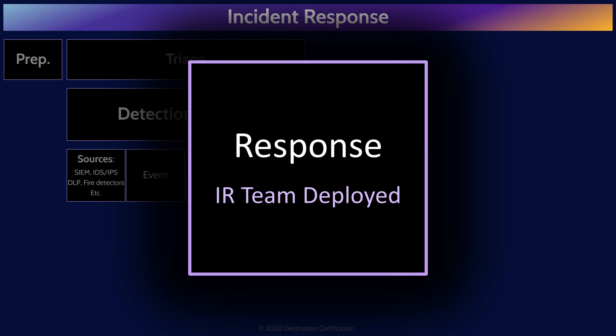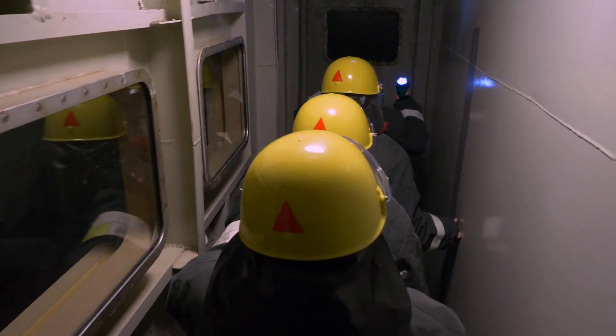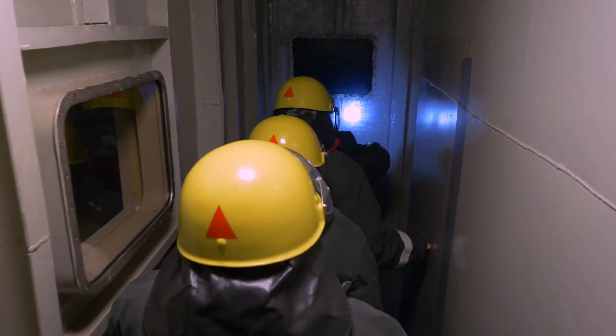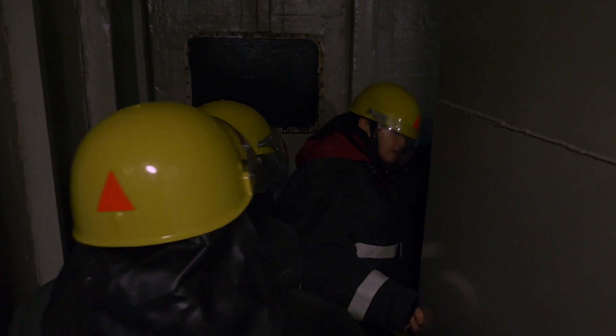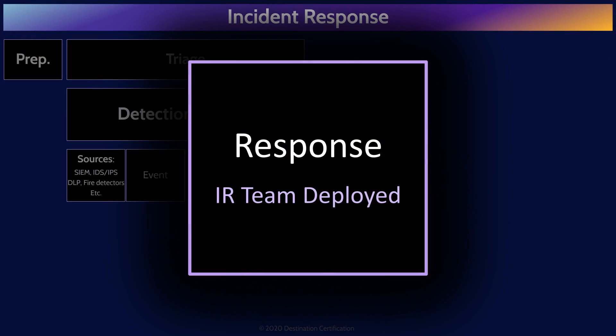Once we have detected an incident, the next step is to respond by activating our incident response team. One of the first things the incident response team is going to do is conduct an impact assessment. They're going to try to determine the severity of the incident and how long it will take to recover. The impact assessment drives the rest of the process. And if the maximum tolerable downtime is going to be exceeded, then this will be treated not as an incident, but rather will declare a disaster and enact our BCP and DRP plans. More on that in video six when I talk about business continuity management.